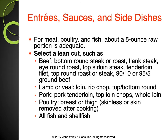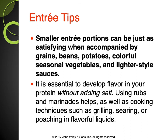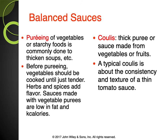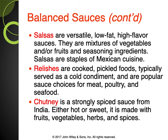For protein, select lean cuts of meat — four to five ounces is an adequate portion for an entree. If you use a smaller cut like three ounces, accompany it with grains, beans, potatoes, and colorful seasonal vegetables to add bulk to the plate. Think about ways to develop flavor without adding salt using techniques from Chapter 8. Balanced sauces like coulis — a thick puree of vegetables or fruit — salsas, relishes, and chutney are all good options.